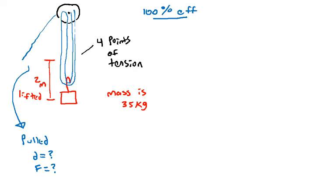Okay, so for this last one we have a pulley system set up where we have four points of tension. Let's say it's 100% efficient pulley and the mass is 35 kilograms lifted two meters into the air. So what I want you to find is what is the force that we have to pull right here as we pull on this, and also how far would we pull on this? This will be good review, so go ahead and pause and do your best here, then we can check.